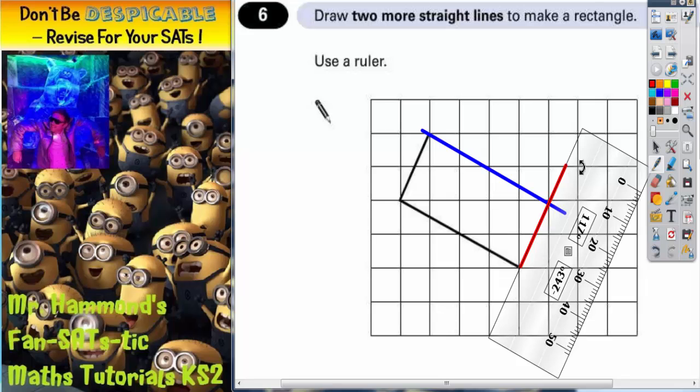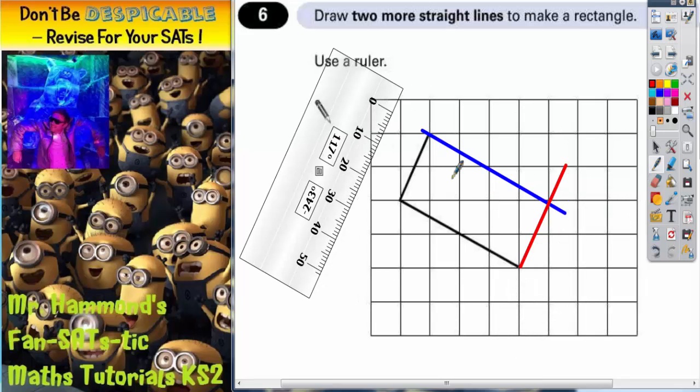So we've got two sides, two short sides which are now parallel which is those two. And we've got two long sides which are parallel which is those two. So there's the rectangle.